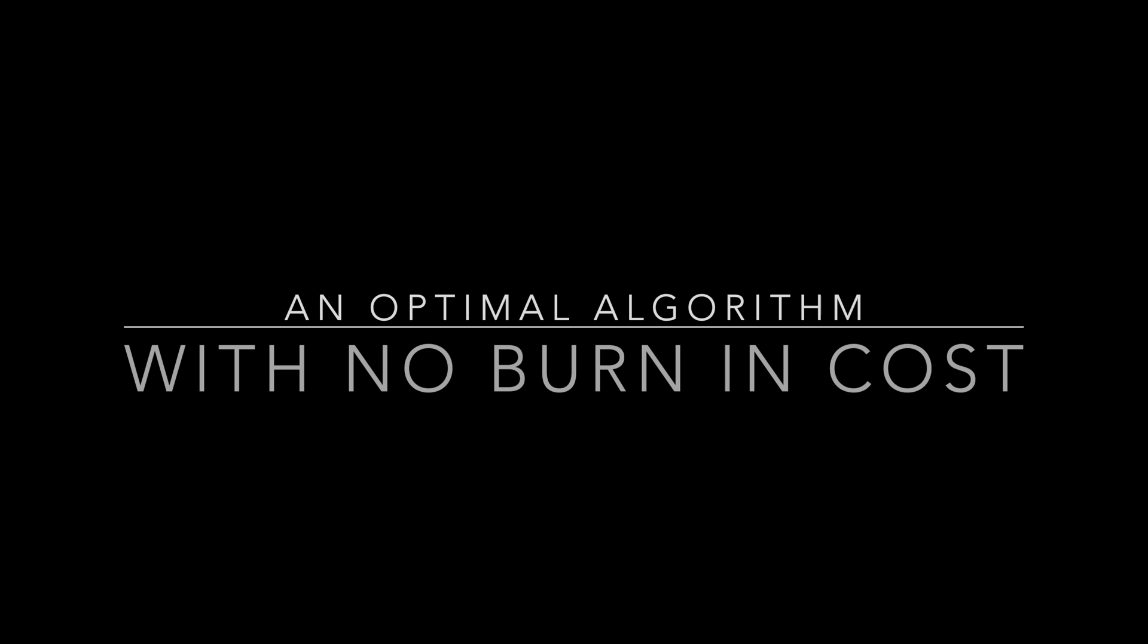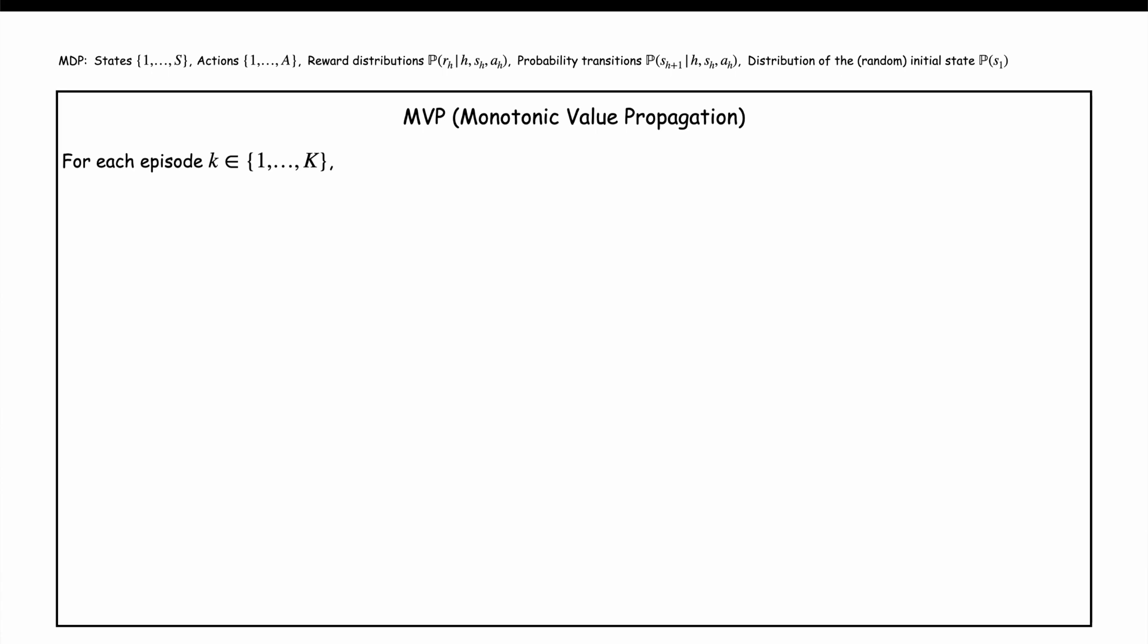An optimal algorithm with no burning cost. Now, what is that algorithm MVP? It is based on, guess what, UCB. That's why I spoke about it earlier. At each episode, we run the policy which maximizes some estimate of the optimal q function, q star hat. The whole point is to compute that estimate, q star hat. At each episode, we collect observations on the number of visits and rewards of each time state and action tuple, HsA.